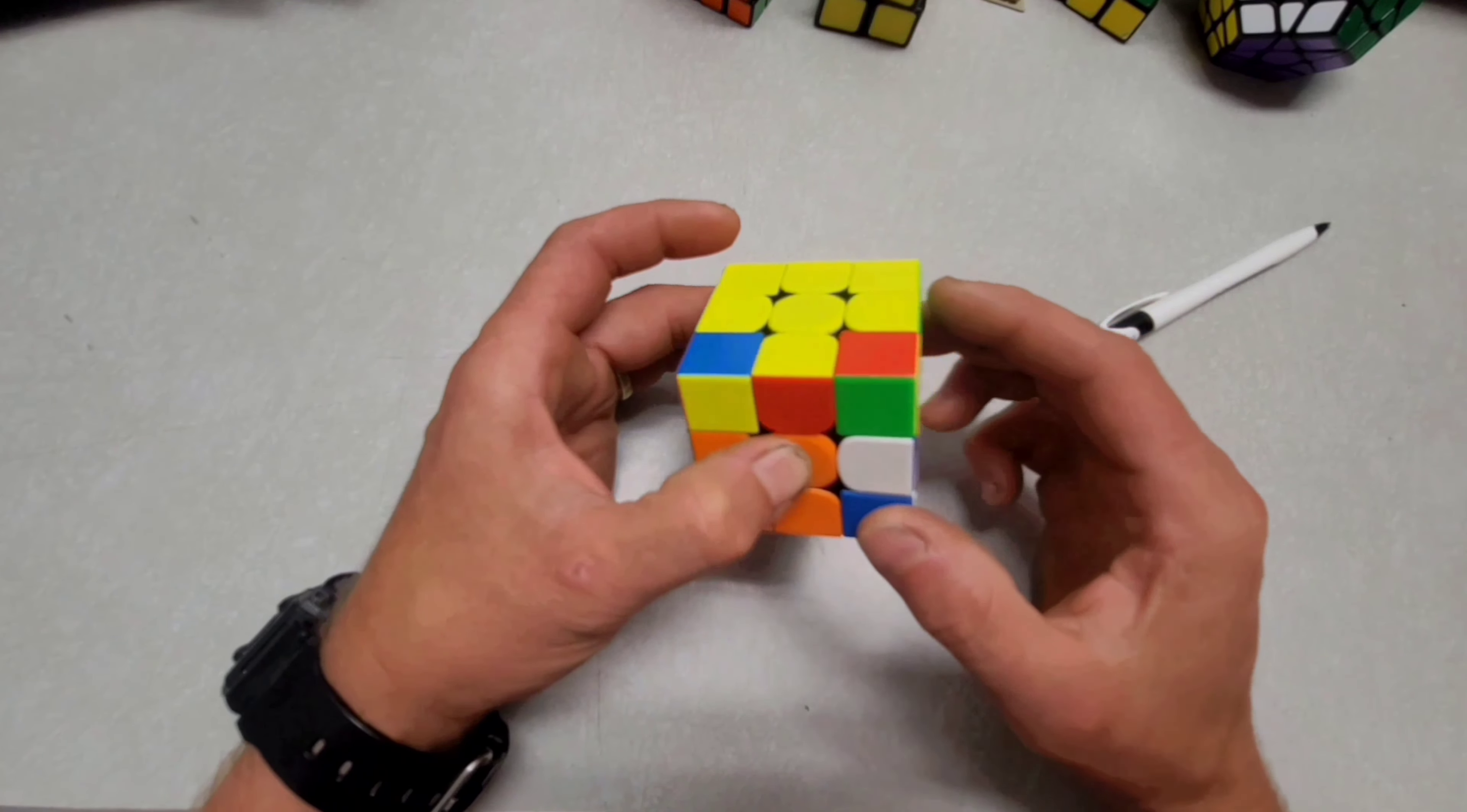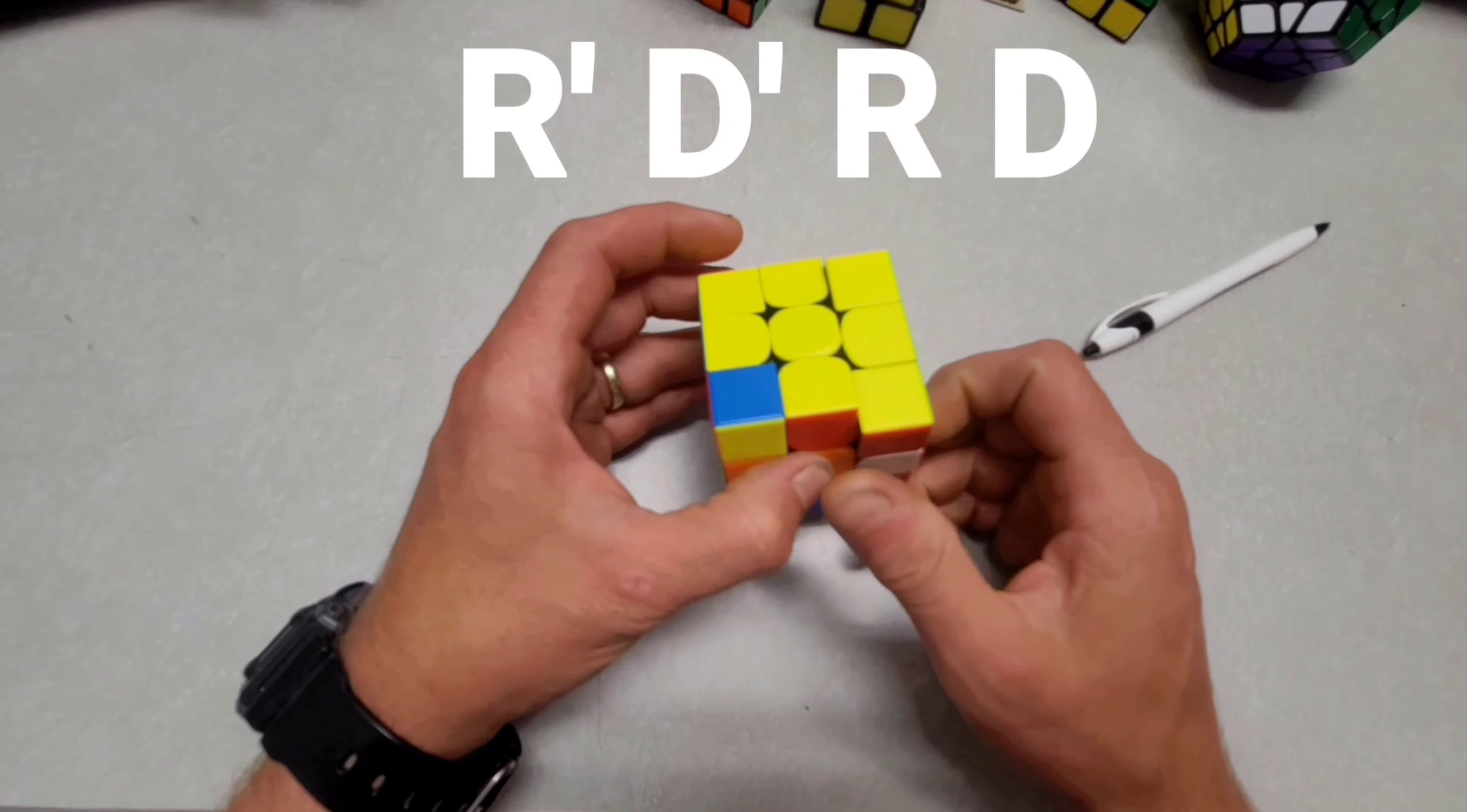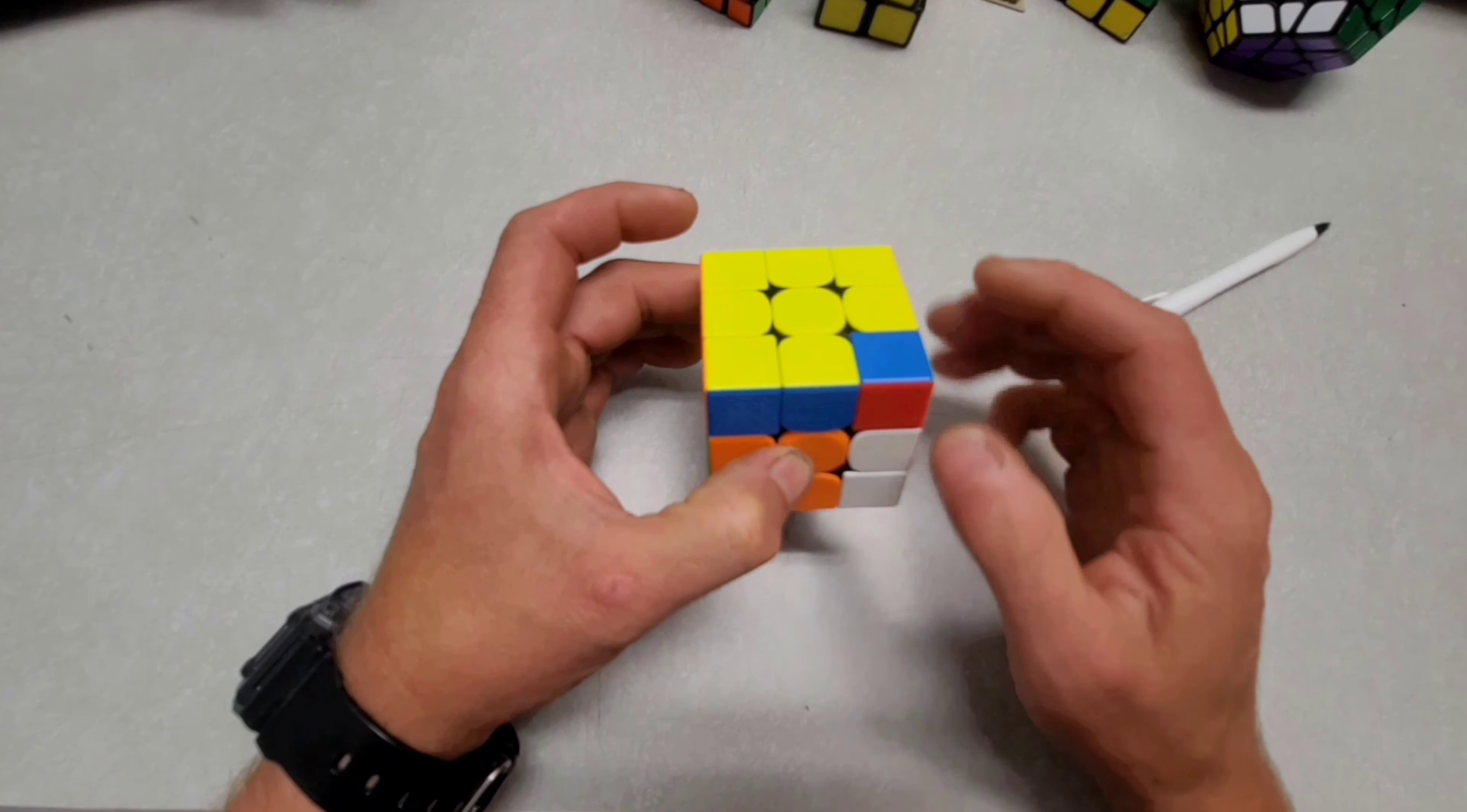So at this point it looks like the cube is messed up, right? So now right prime, down prime, right down. Right prime, down prime, right. And it solves. Don't forget to turn this piece. We're looking for one more piece here. And we have solved the three of the three.